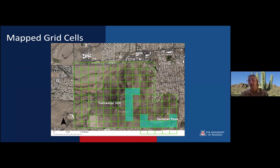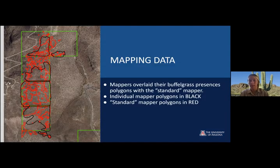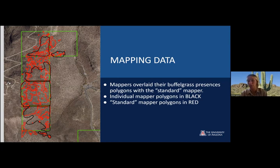Here's a more specified view of our study area. This was the grid that we overlaid on the study area to map buffelgrass. The grid cells highlighted in a minty green color are the ones we focused on, and that all mappers were able to map with present polygons for buffelgrass. That mapping data was then overlaid with each other. We had individual mappers overlay their polygons with the standard mapper — individual mapper polygons shown in black and the standard mapper polygons in red. The individual mappers would be Scarlett or Victor or anyone else participating in the project. The standard mapper is someone with extensive experience in mapping buffelgrass, used as the gold standard — someone from the Sonoran Desert Museum.